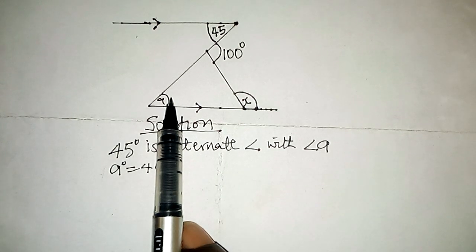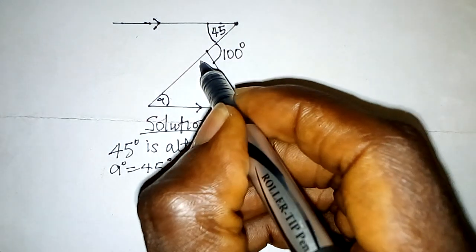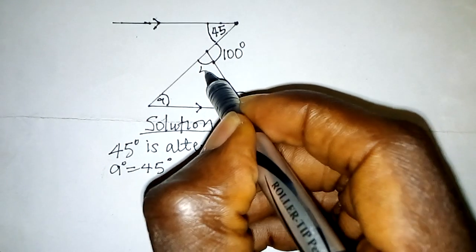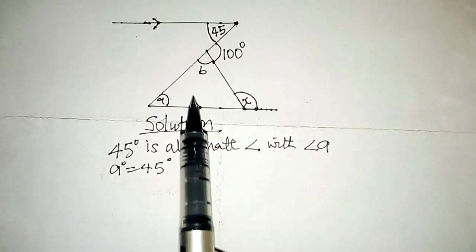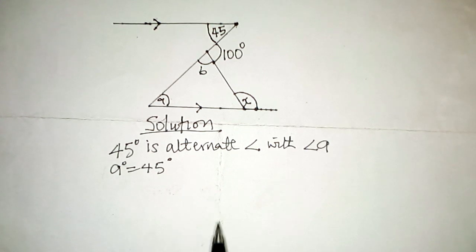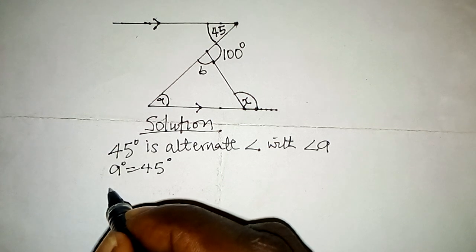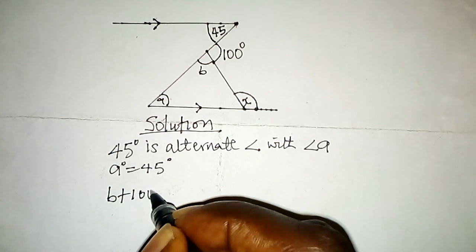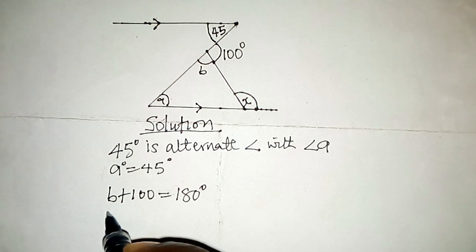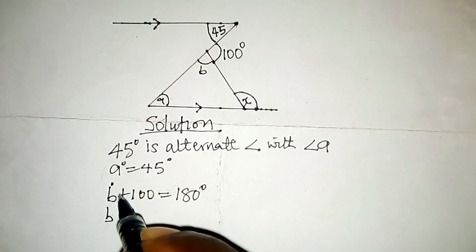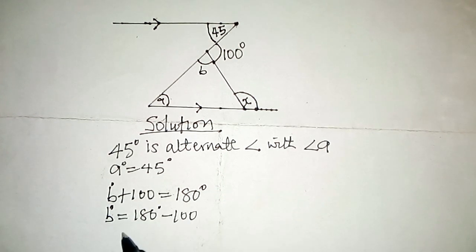Now that we know this part to be 45 degrees, the next thing we need is to find this angle here — let us call it angle B. This is an angle on a straight line, and the sum of angles on a straight line is equal to 180 degrees. Making B the subject, angle B equals 180 degrees minus 100, which gives us B equal to 80 degrees.